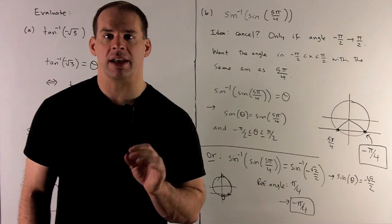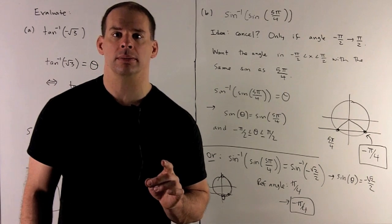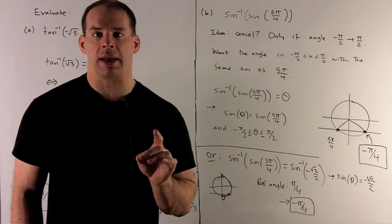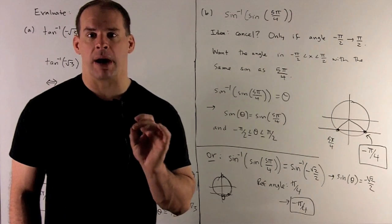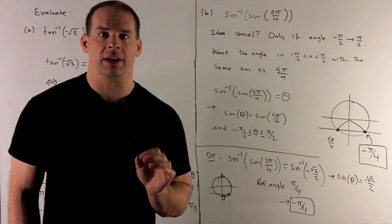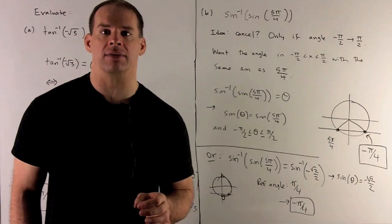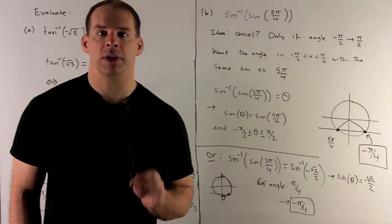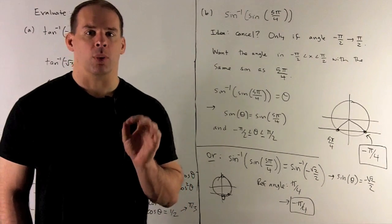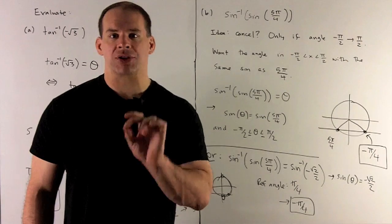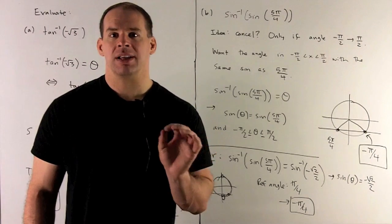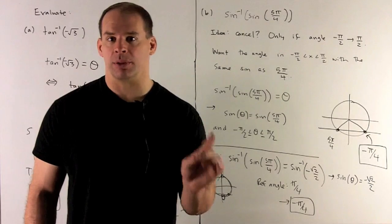Next: inverse sine of sine of 5 pi over 4. We'd like to cancel inverse sine with sine, leaving us with 5 pi over 4. The problem is inverse sine has to be between minus pi halves and pi halves, so we need to try something else. What we can do is box off sine of 5 pi over 4, write out our definition, stick it back in, and see what the picture is.